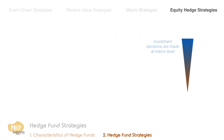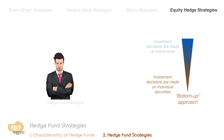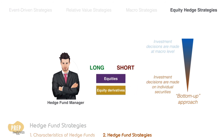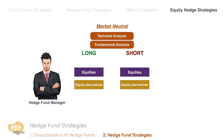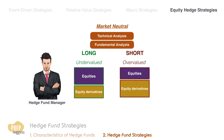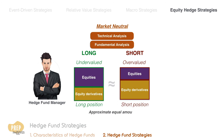Conversely, equity hedge strategies employ a bottom-up approach, where investment decisions are made according to the views on individual securities. Hedge fund managers apply their views on individual companies through long or short positions in publicly traded equities and equity derivative securities. Examples of equity hedge strategies include market-neutral, where technical or fundamental analysis is used to select undervalued equities to be held long and overvalued equities to be sold short. The long and short positions are taken in approximately equal amounts to profit from their relative price movements with minimal exposure to market risk.